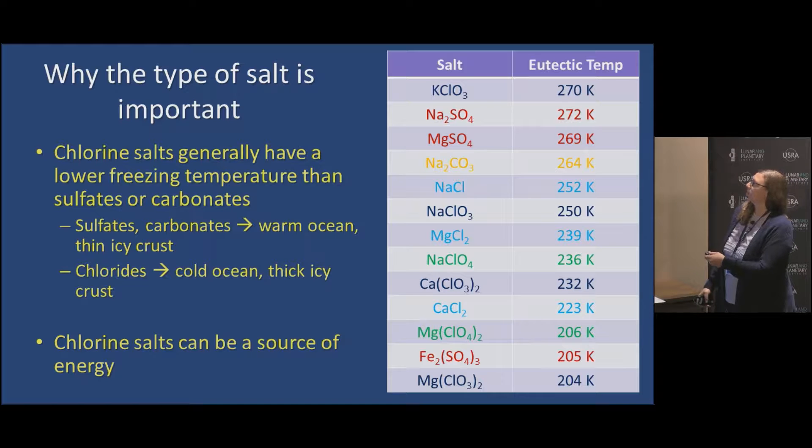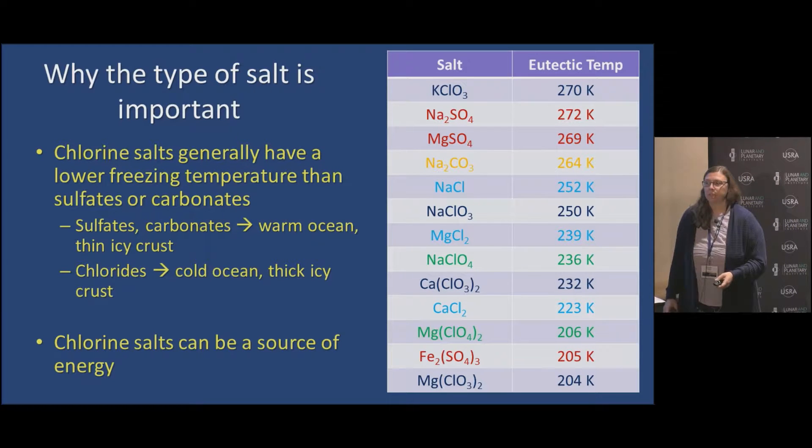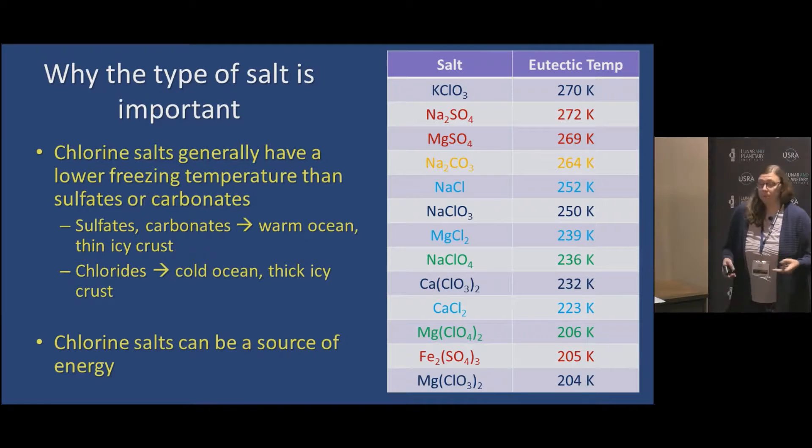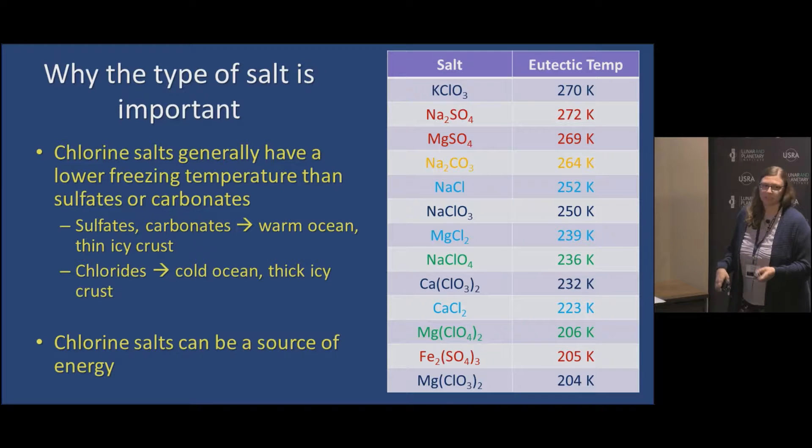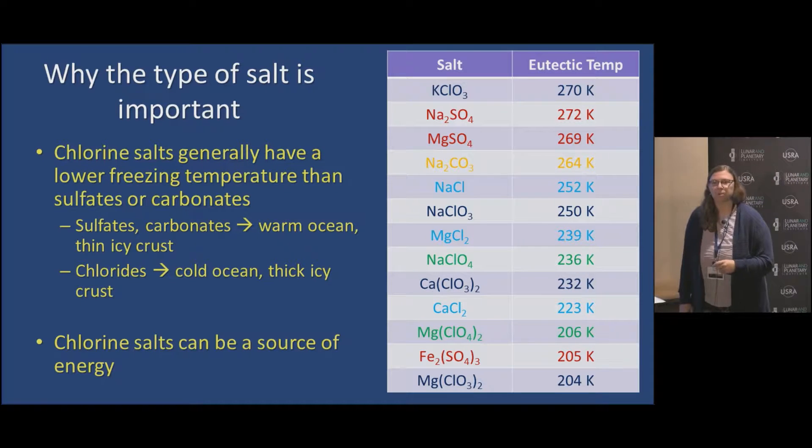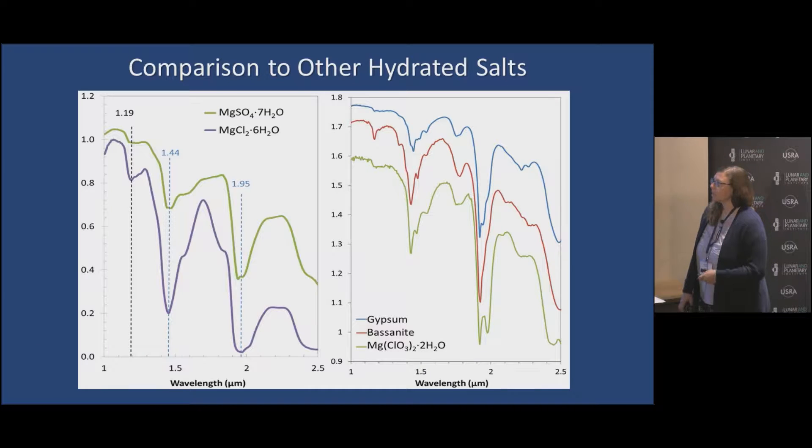Potassium chloride is up here, magnesium sulfate only depresses the freezing point by maybe four degrees, but you have things like magnesium perchlorate or magnesium chlorate that can reduce the freezing point by almost 80 degrees. Thinking about what that actually means for the ocean: if it's predominantly sulfate or potentially carbonate salt, it's probably a warmer ocean than it would be if there's chlorides present. It's kind of this catch-22 where yes, maybe chlorides mean that it's easier to have liquid water, but it is colder and life doesn't tend to like that really cold, high salinity environment.